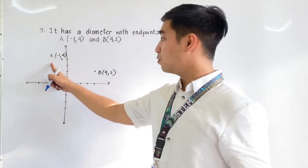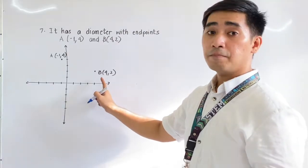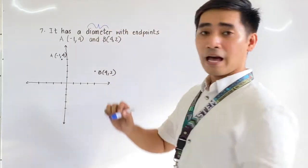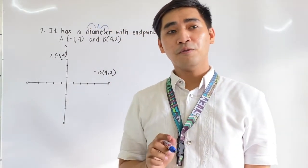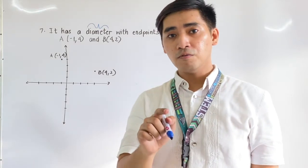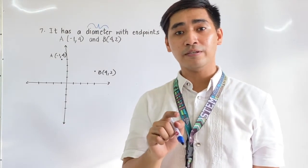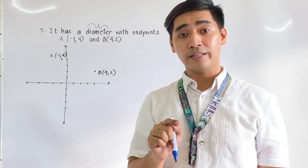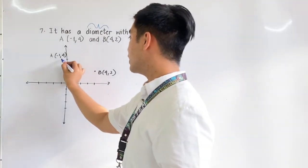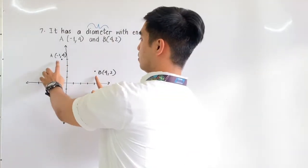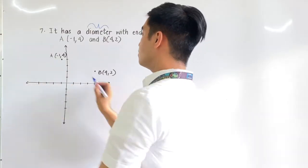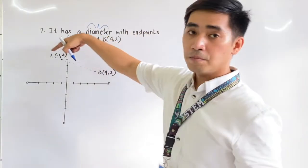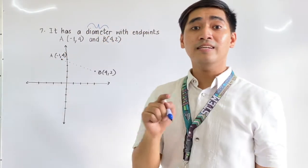This is point A at negative 1 and positive 4, and this is point B at positive 4 and positive 2. Now that we are given a diameter, always remember that the middle point or the center of the diameter is always the center of the circle, because the diameter is the longest chord inside a circle. Therefore, if we draw line AB, somewhere between A and B lies the center.